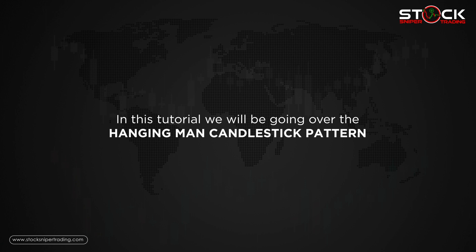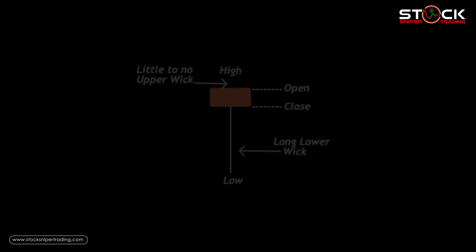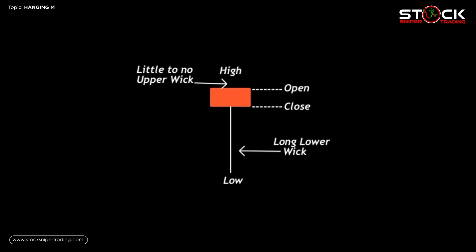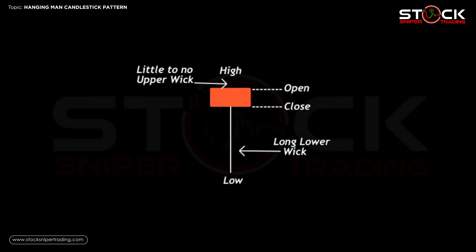Welcome to Stock Sniper Trading. In today's tutorial we will be going over the hanging man candlestick pattern. The hanging man candlestick pattern is seen as a bearish candlestick pattern. It is characterized with a long lower wick, little to no upper wick, and the open and close are virtually the same, but it does finish with a bearish body.